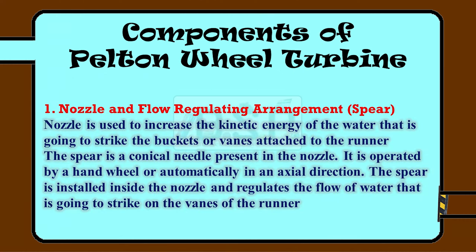Let's have a look at the components of the Pelton wheel turbine. The first component is the nozzle and flow regulating arrangement. The nozzle is used to increase the kinetic energy of the water that is going to strike the buckets or vanes attached to the runner. The spear is a conical needle present in the nozzle, operated by a hand wheel or automatically in an axial direction. The spear is installed inside the nozzle and regulates the flow of water going to strike on the vanes of the runner.